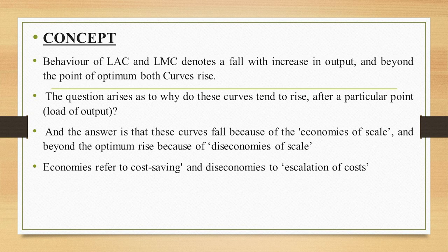The curves fall because of economies of scale and beyond the optimum they rise because of diseconomies. Economies refer to cost savings and diseconomies refer to escalation of costs. Initially you cannot enjoy the cost savings unless you increase the output. Many factors are indivisible — machinery is indivisible, labor is also indivisible — so the full cost of these items is being paid while output is very low.